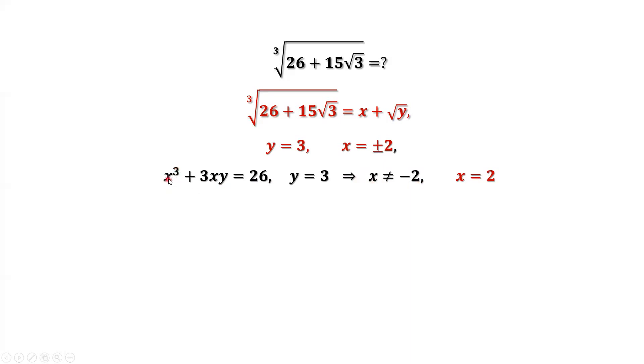x is negative, y is 3 is positive. So the left-hand side is negative, but the right-hand side is positive. So x cannot be negative 2. This implies x can only be 2.